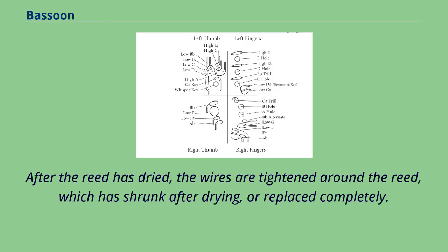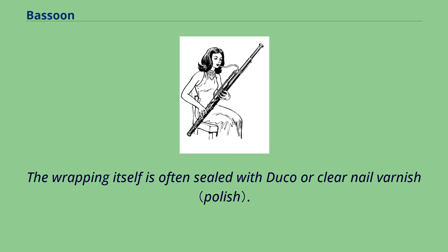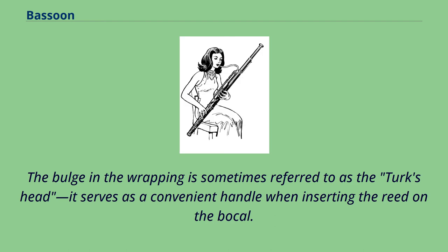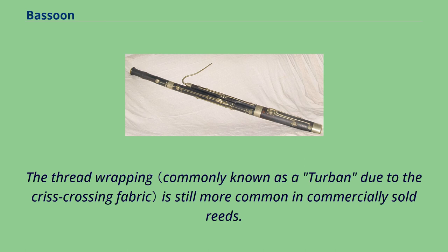After the reed has dried, the wires are tightened around the reed, which has shrunk after drying, or replaced completely. The lower part is sealed and then wrapped with thread to ensure no air leaks out through the bottom of the reed and that the reed maintains its shape. The wrapping itself is often sealed with duco or clear nail varnish. Electrical tape can also be used as a wrapping for amateur reed makers. The bulge in the wrapping is sometimes referred to as the turk's head; it serves as a convenient handle when inserting the reed on the bocal. More recently, more players are choosing heat shrink tubing instead of the time-consuming thread, though thread wrapping is still more common in commercially sold reeds.